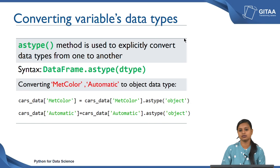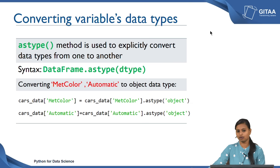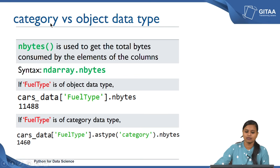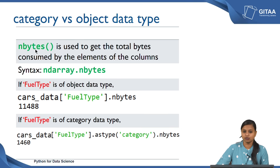There are two data types Python can handle for character data: category and object. We have changed everything to object, but there is also the category data type. Let us see what the impact is when we have a variable like metallic_color or any categorical variable stored as category versus as object. The nbytes command is used to get the total bytes consumed by the elements of a column, and the syntax is ndarray.nbytes.